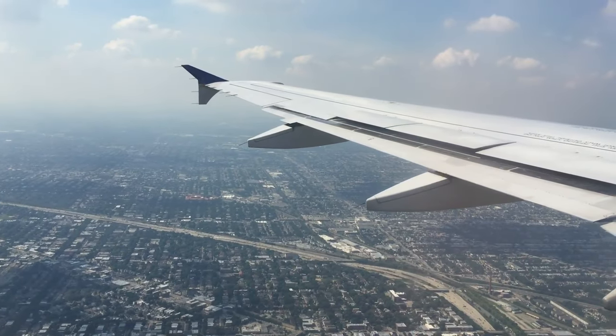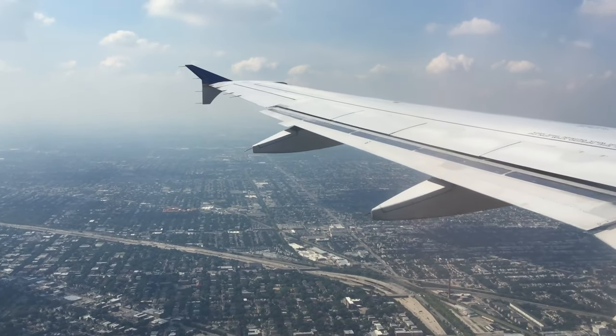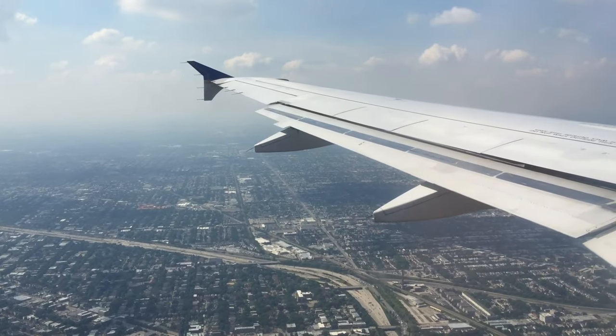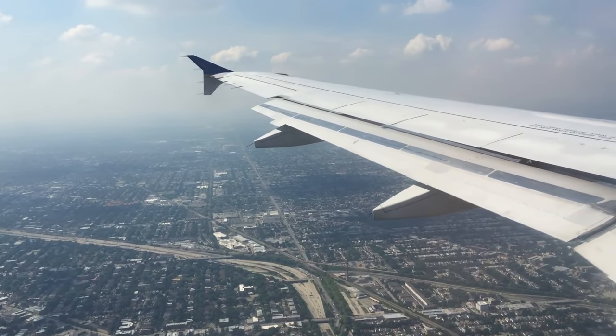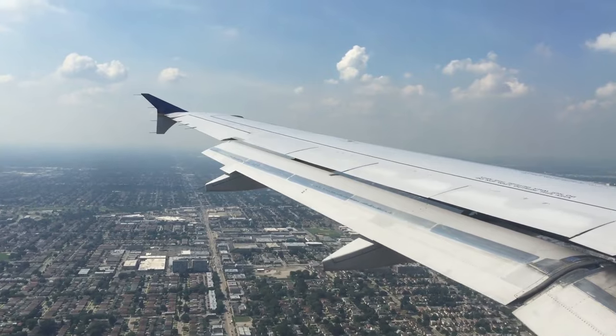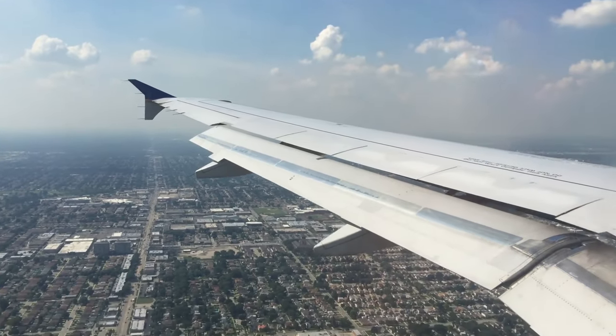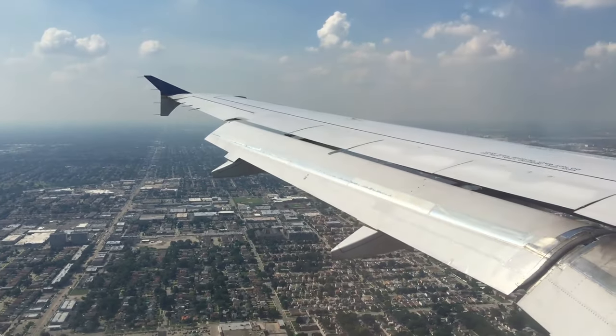If you're in a window seat on an airliner, looking out during landing, you'll notice part of the wing moving like this, with the back surface extending downwards, more and more as the airplane gets closer to land. These are flaps.